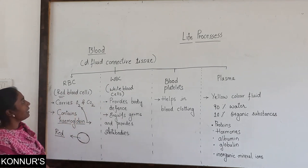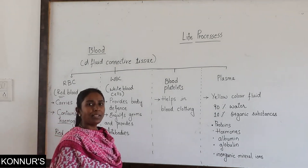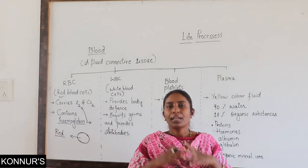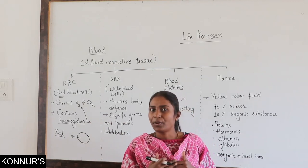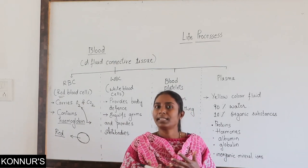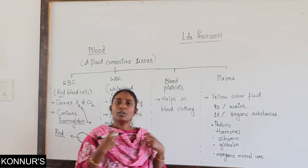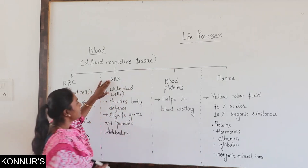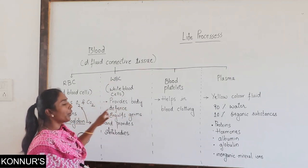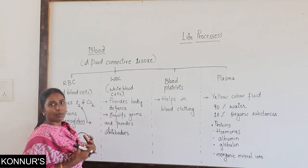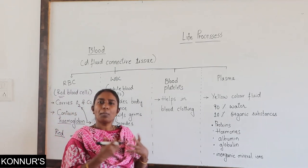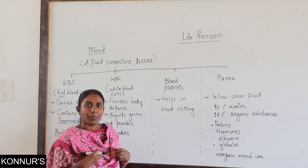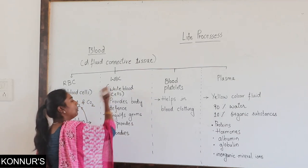The next cell is WBC — white blood cells. Each country has an army; if any invader comes into the country, the army soldiers fight against it. In the same way, our body also has a mechanism like an army, and this army is the white blood cells. That is why WBC provides body defense. When germs attack our body — we are exposed to so many germs in the atmosphere — our body is protected by WBC.